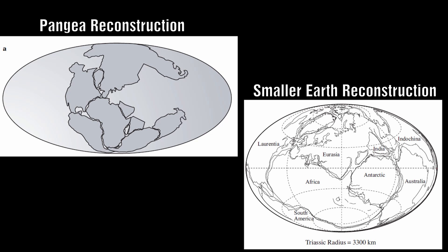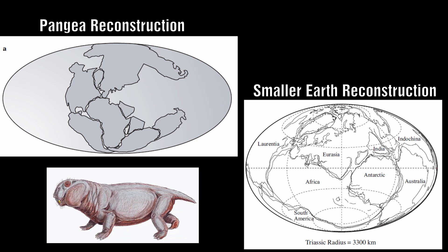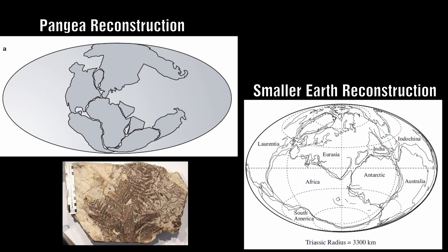Fossil bones of the Triassic reptile Lystrosaurus have been found in Gondwana and India, but also in many places in Eurasia which should have been separated by the wide Tethys Sea. Many flora species typical of East Asia have been found on the opposite side of the Pacific while the East Pacific barrier was at its maximum. The only way to solve this problem was to invoke a series of smaller continental fragments making an unusually high-velocity trip from East Asia near the equator.